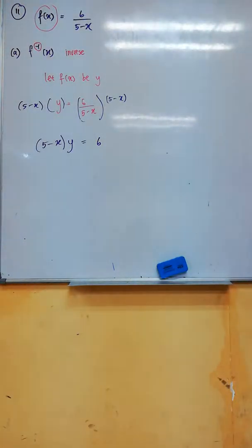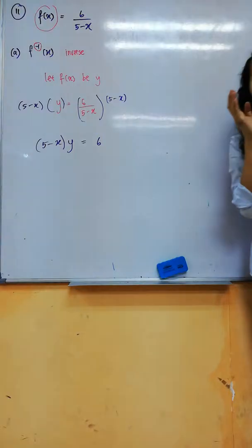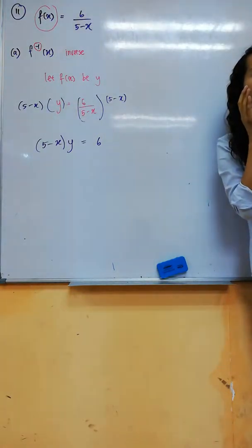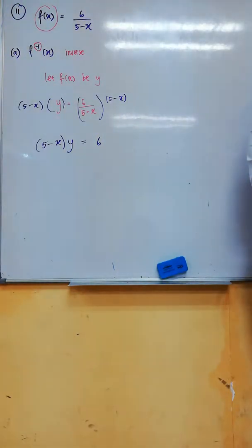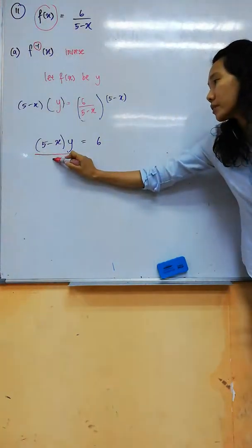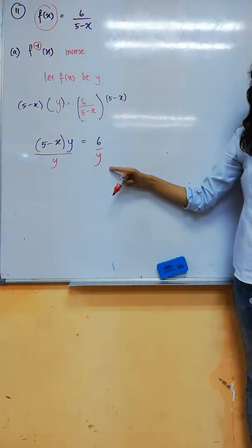Now, think again. I want to make x alone. So which one that you want to get rid of? Y. You want to get rid of y. So what do you need to do? Divide y. Yes, you divide by y on the left, divide by y on the right. You can do this.